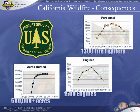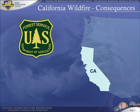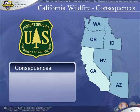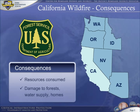These numbers are too big for one state to handle, so the Forest Service relied heavily on firefighters from Washington, Oregon, Idaho, Nevada, and Arizona. Response is a regional affair, marshalling people and equipment from all over the west coast. The consequences are huge in terms of both resources consumed and damages to the forests, water supply, and people's homes.